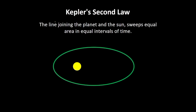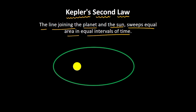Hello there! In this video, we will be learning about Kepler's second law of planetary motion. The statement of Kepler's second law is: the line joining the planet and the sun sweeps equal area in equal interval of time.